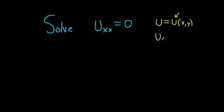So u sub x, this denotes the first partial derivative of u with respect to x. So it's the rate of change of u in the x direction. So it's del u del x. And then u xx, well, this is simply the second partial derivative of u with respect to x.